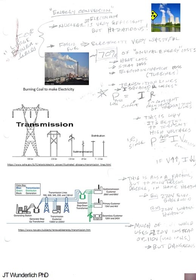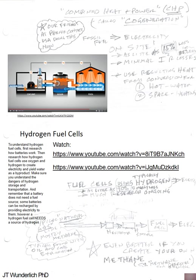Some other things in energy conversion and transmitting power — losses, I-squared-R losses, combined heat and power techniques, hydrogen fuel cells. These are all mentioned in this chapter in the book.